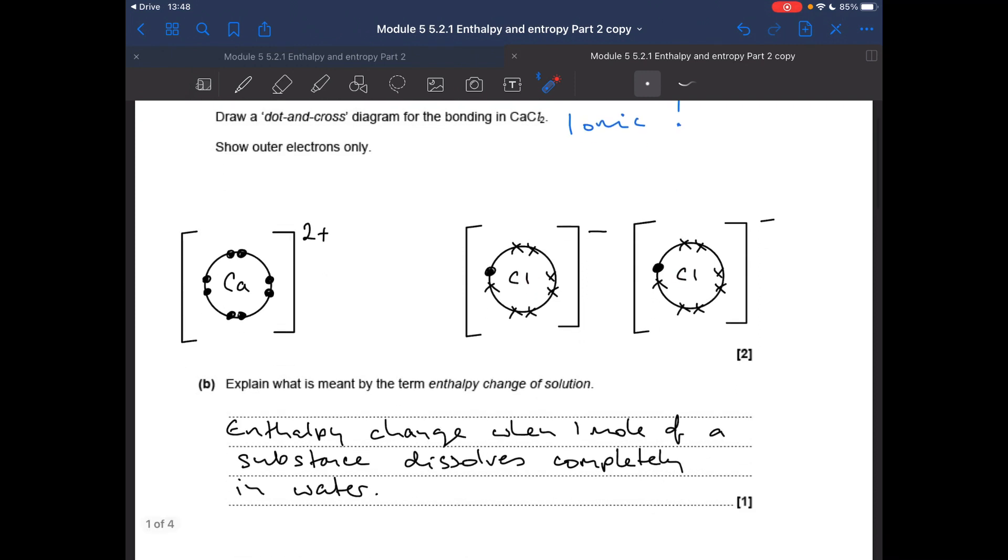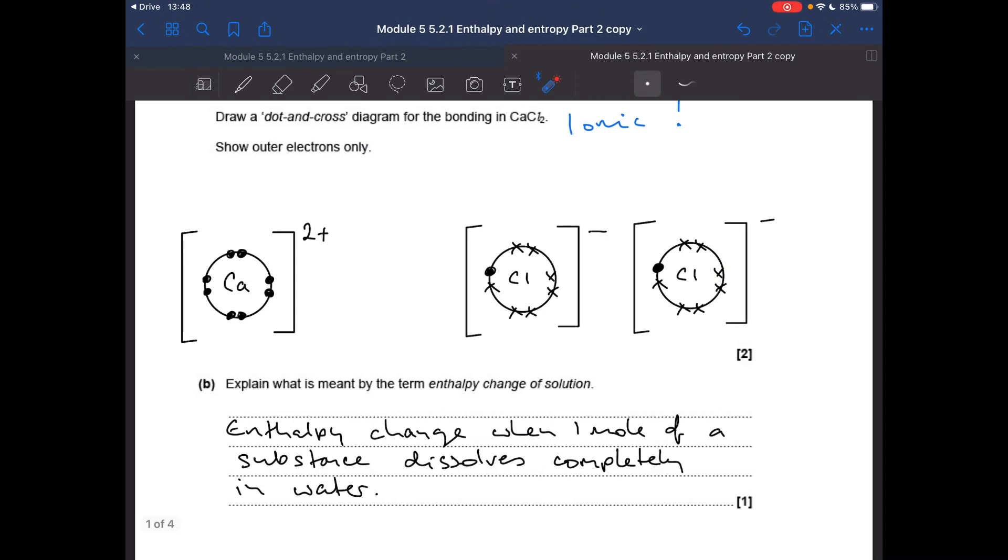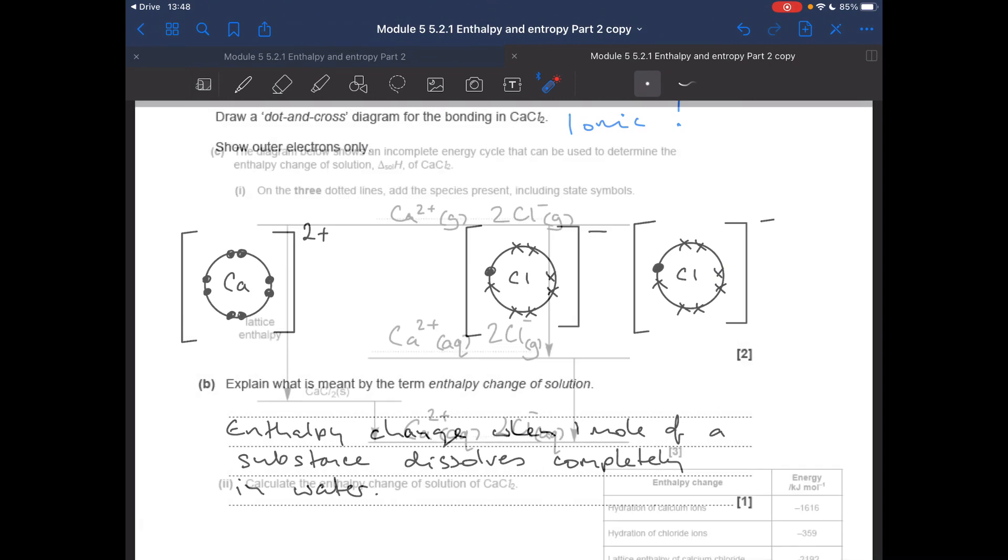What's meant by the term enthalpy change of solution? It's the enthalpy change when one mole of a substance dissolves completely in water. Add the species present on the three dotted lines, don't forget your state symbols. So we've been given that, so that's the solid lattice. The lattice enthalpy goes from gaseous ions to the solid ionic lattice, so the gaseous ions go up there. This is the enthalpy change of solution, so we have aqueous ions at the bottom there. And then these two steps here are the hydration enthalpies for the ions. You can see I've hydrated the calcium 2+ first, so that would be that arrow. And then here I've gone for the two chloride ions hydrations.